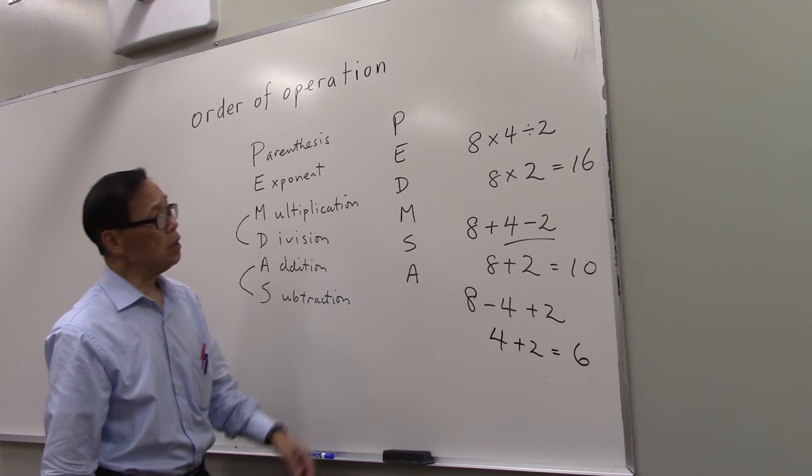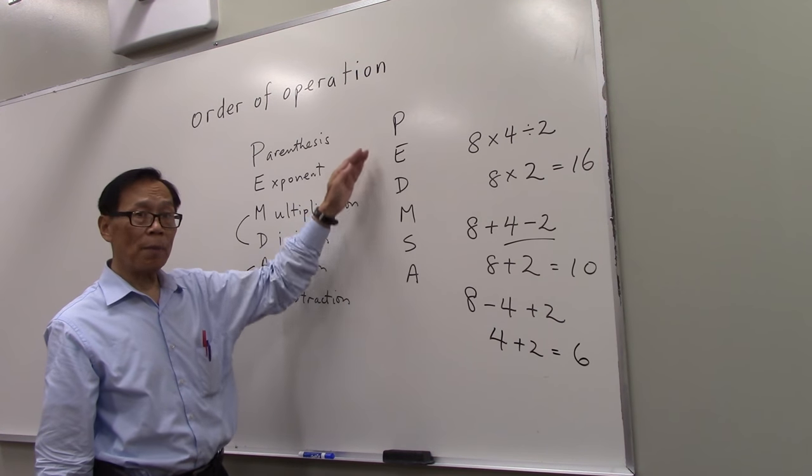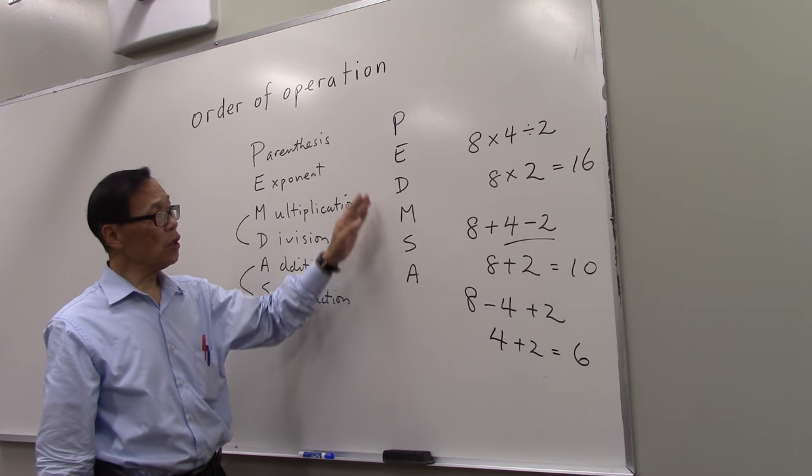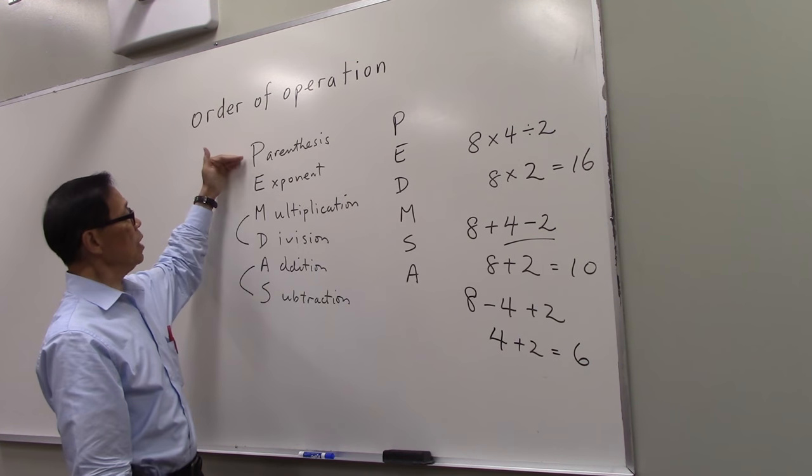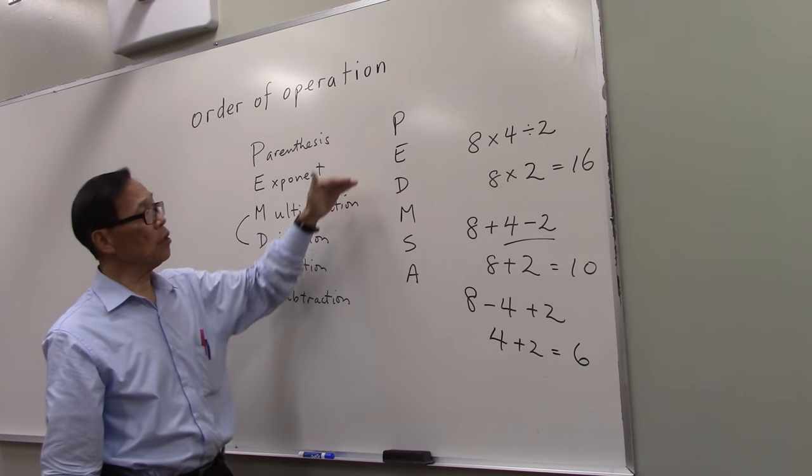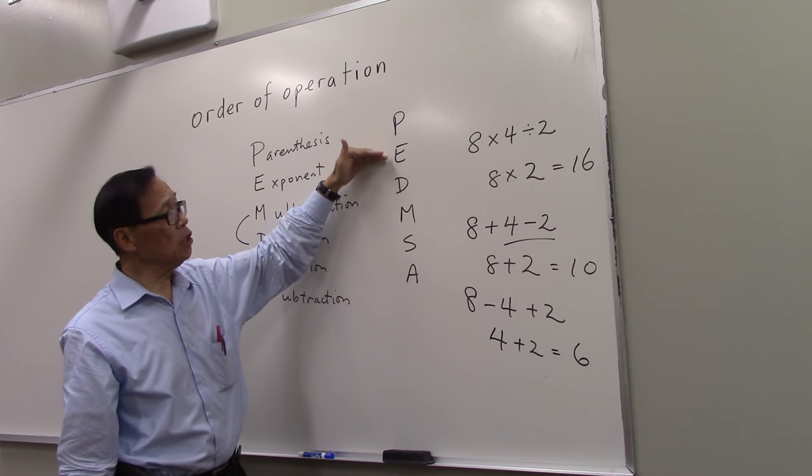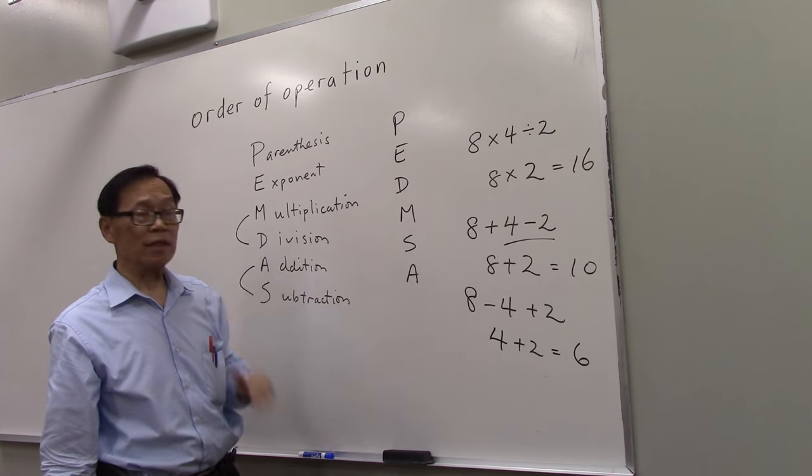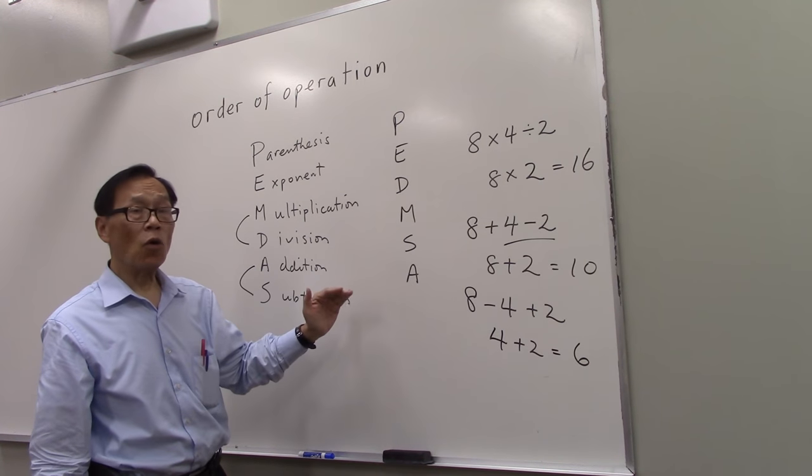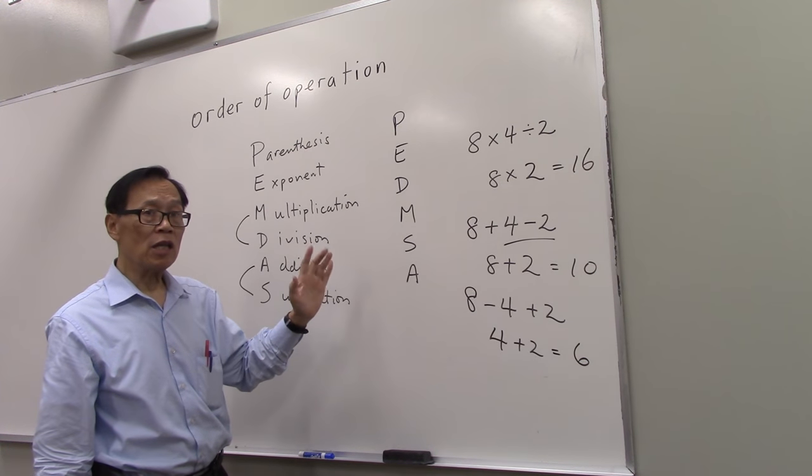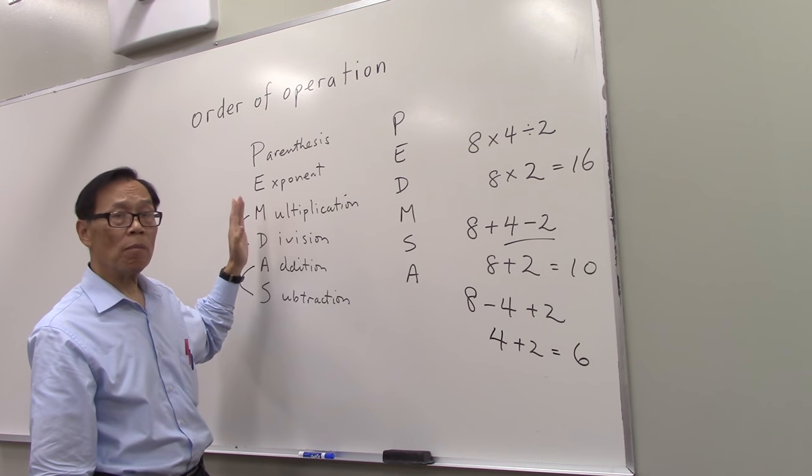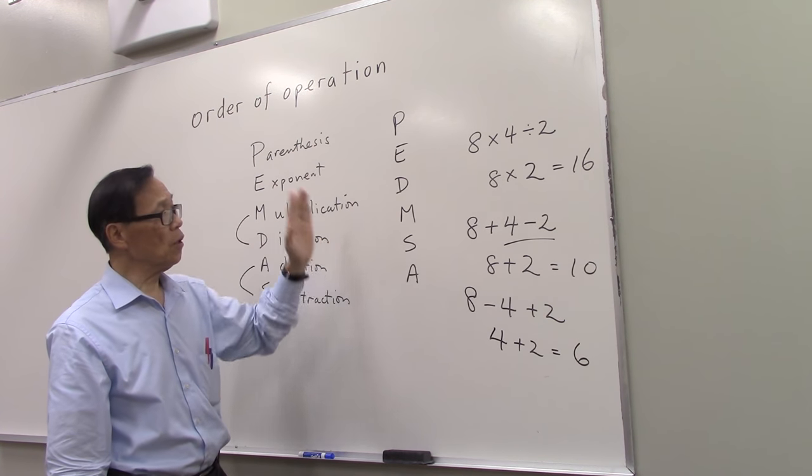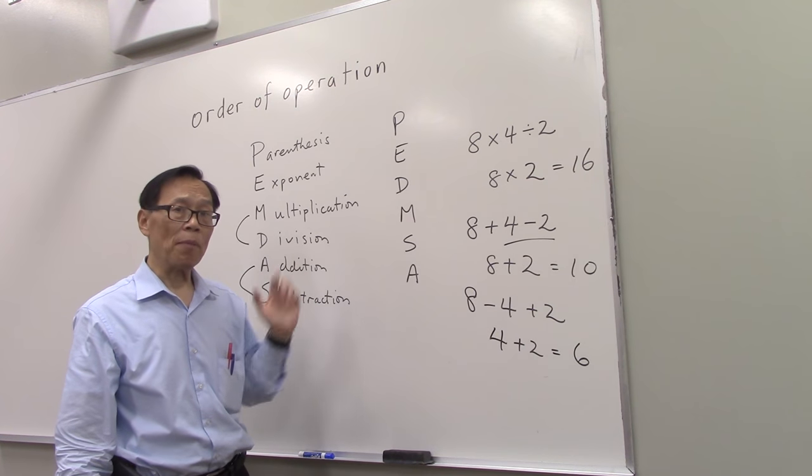So, this order of operation, you can memorize it as, instead of please excuse my dear Aunt Sally, maybe you can memorize it as please enjoy dating my sister Alice. But this order of operation is more accurate than what most students have learned. So, this is my suggestion, my proposal.